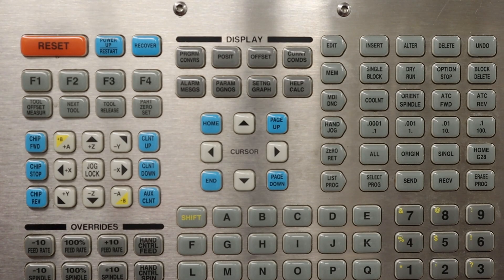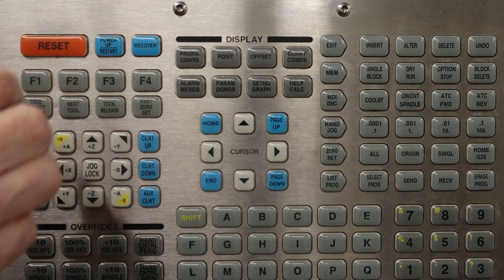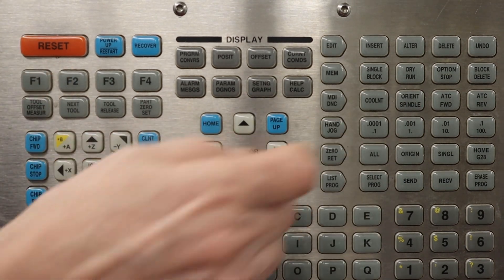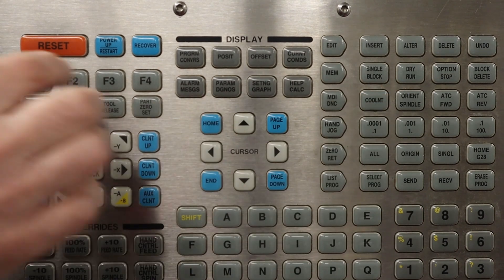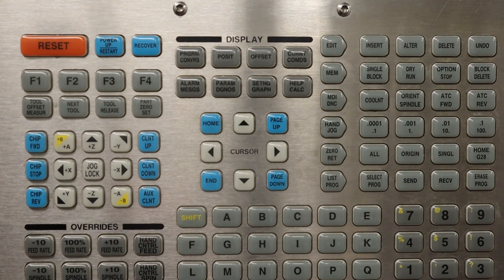So before inserting the Heimer there's a new dance I want to follow. Which is Orient Spindle. Oops I need to be in hand jog. And then Orient Spindle. And then reset. And then it's all good to go. And that'll ensure that when I put the Heimer in, it's in exactly the same orientation each time.